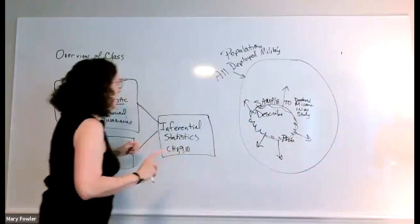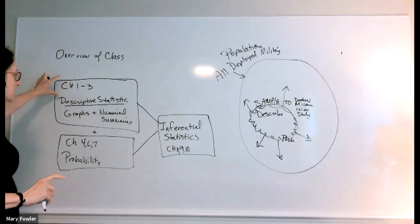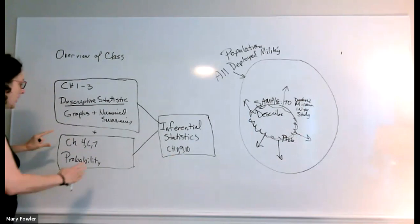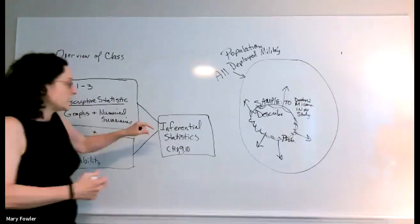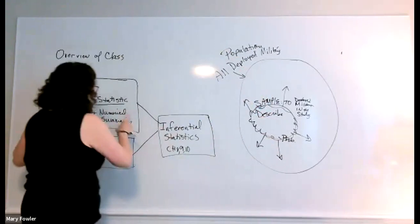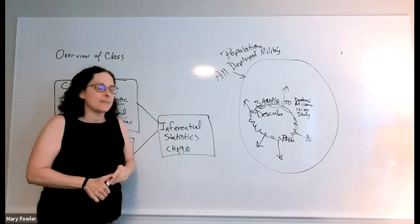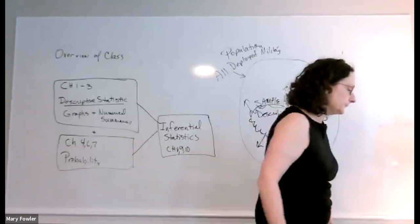Back to what's going on in our class: we have chapters four, six, and seven which consists of this probability. That's the power of what we need so that we can go from descriptive to inferential. So descriptive plus probability brings us to inferential. I'm going to transition over to the notes and share my screen.